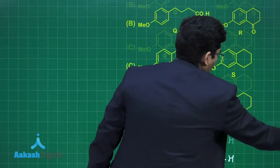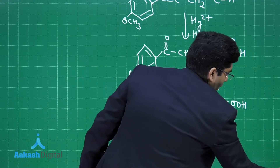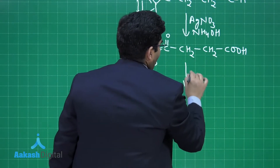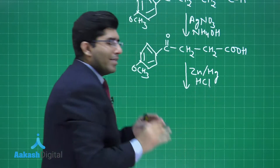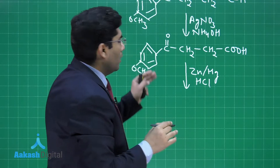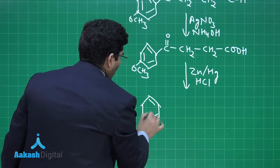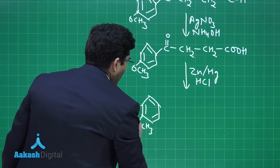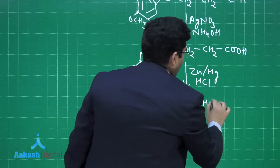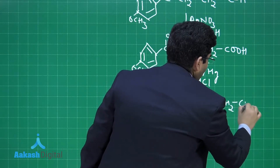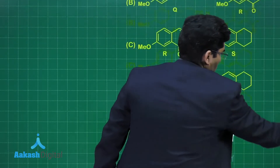Next, zinc amalgam (Zn-Hg) with HCl is added — this is Clemmensen reduction. In Clemmensen reduction, the carbonyl group converts to an alkane (CH2). The product has a benzene ring with methoxy group (OCH3), and the chain becomes CH2—CH2—CH2—COOH. As per the question, this is product Q.